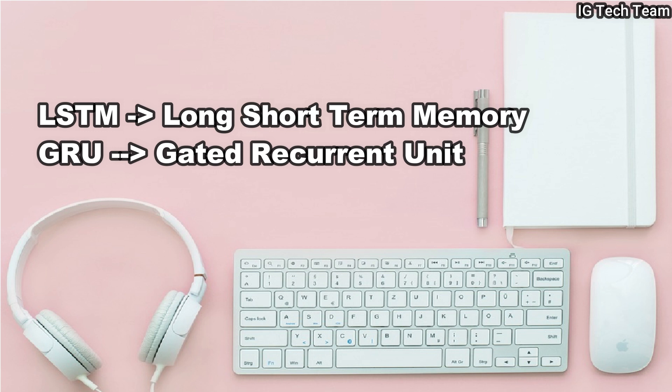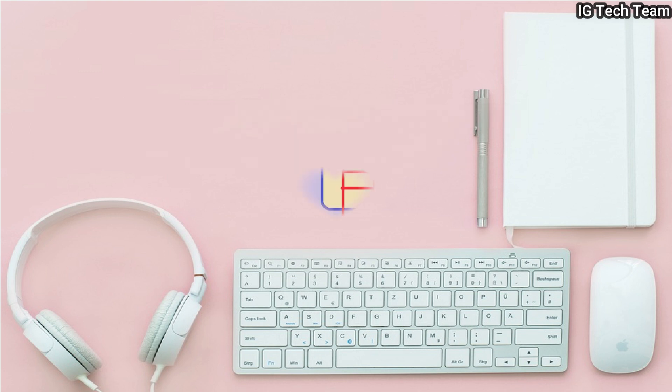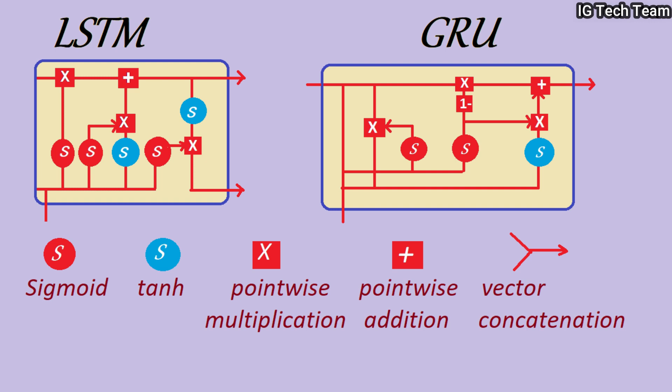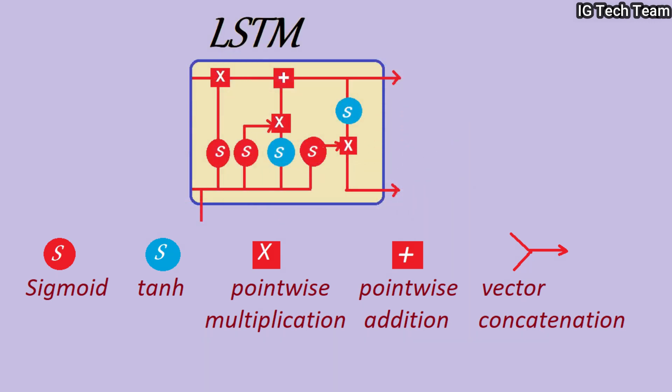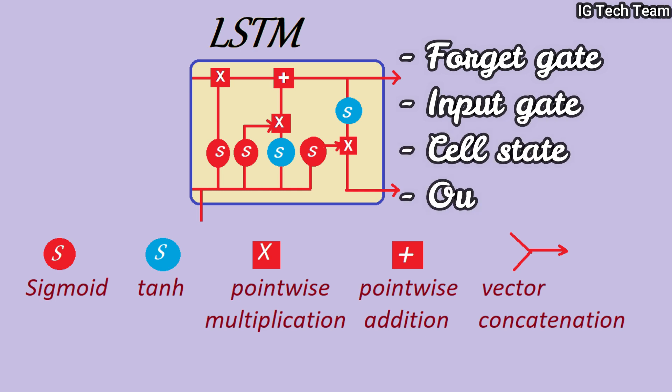So LSTM, long short-term memory, and GRU, gated recurrent unit, are capable of learning long-term dependencies. They are best used in speech recognition, speech synthesis, and text generation. You can see the architecture of LSTM and GRU. Don't get worried by looking at this architecture—this is not that much hard. I will explain this in a very easy way. First we have LSTM. We have several parts in LSTM: forget gate, input gate, cell state, and output gate.